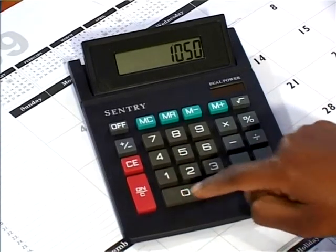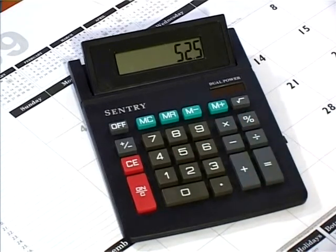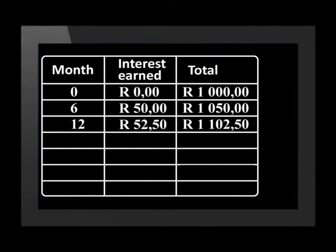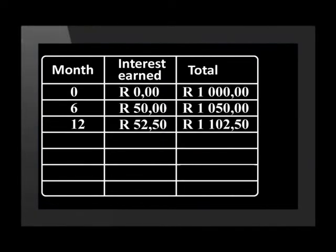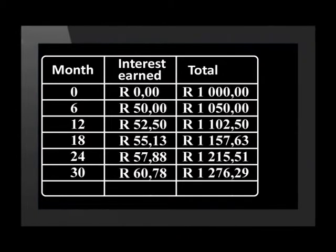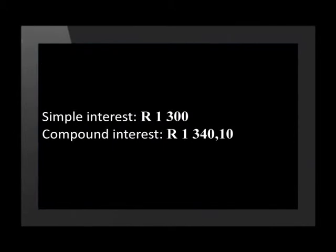Five percent of one thousand and fifty rand is not fifty rand but fifty two rand and fifty cents. The total after twelve months is then one thousand one hundred and two rand and fifty cents. I calculated five percent interest on the original amount plus interest added after the first six months. In this way you earn interest on interest — we call this a compounding effect. Every time interest is calculated it is calculated on a bigger total, and so every time interest is calculated the interest is a bigger amount. The total after three years is not just one thousand three hundred rand as we calculated for simple interest, but one thousand three hundred and forty rand and ten cents.